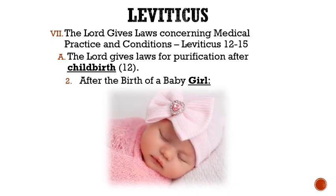After the birth of a baby girl, the mom was unclean for 2 weeks or 14 days, and then she spent another 66 days purifying herself, giving us a total of 80 days. This is double that of the boy, possibly because of both her bleeding and the vaginal bleeding of the baby girl during the birth process.